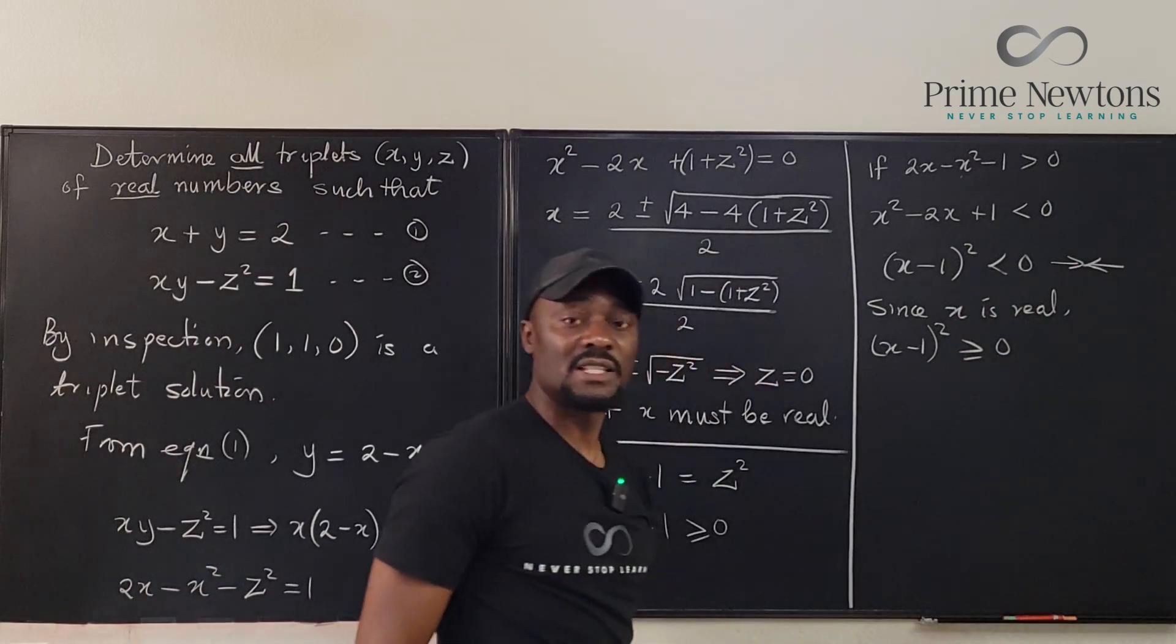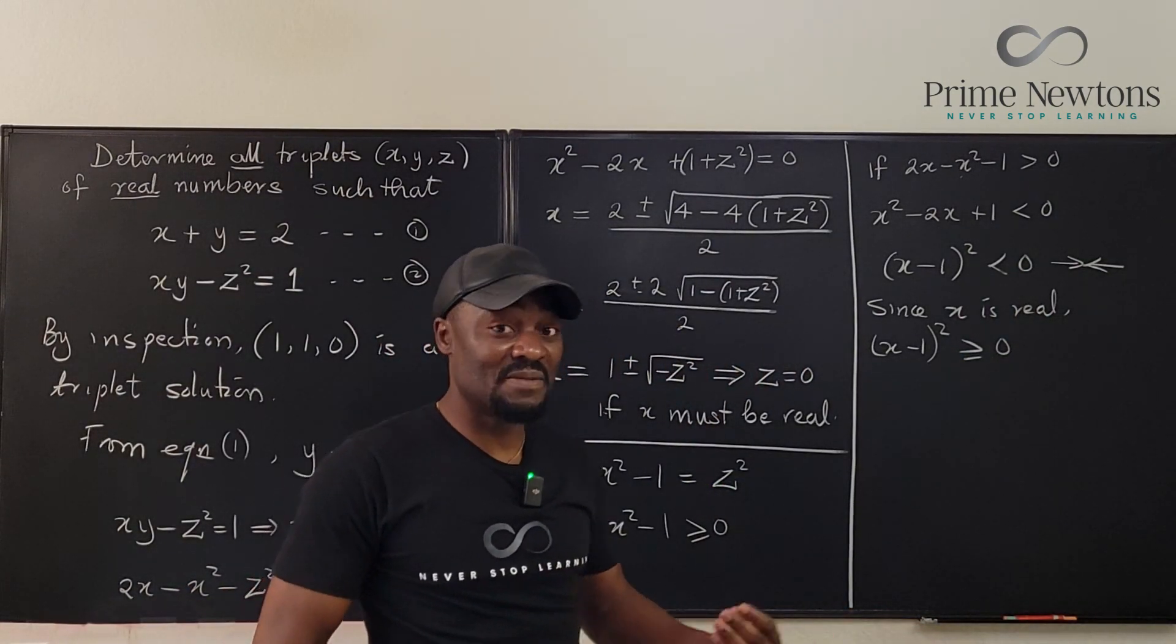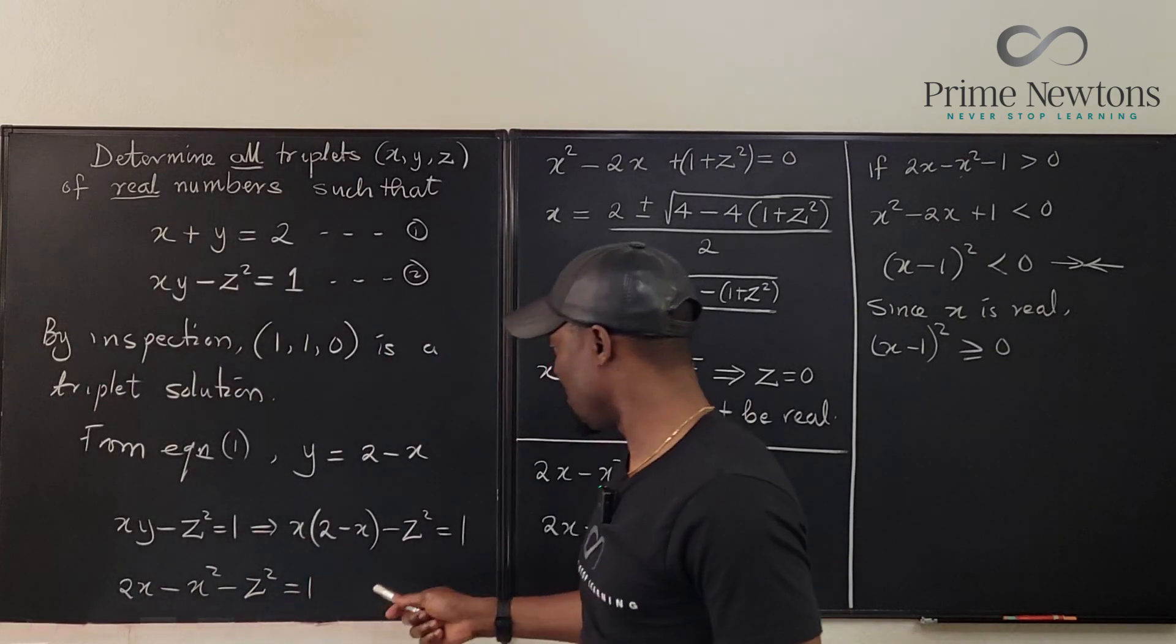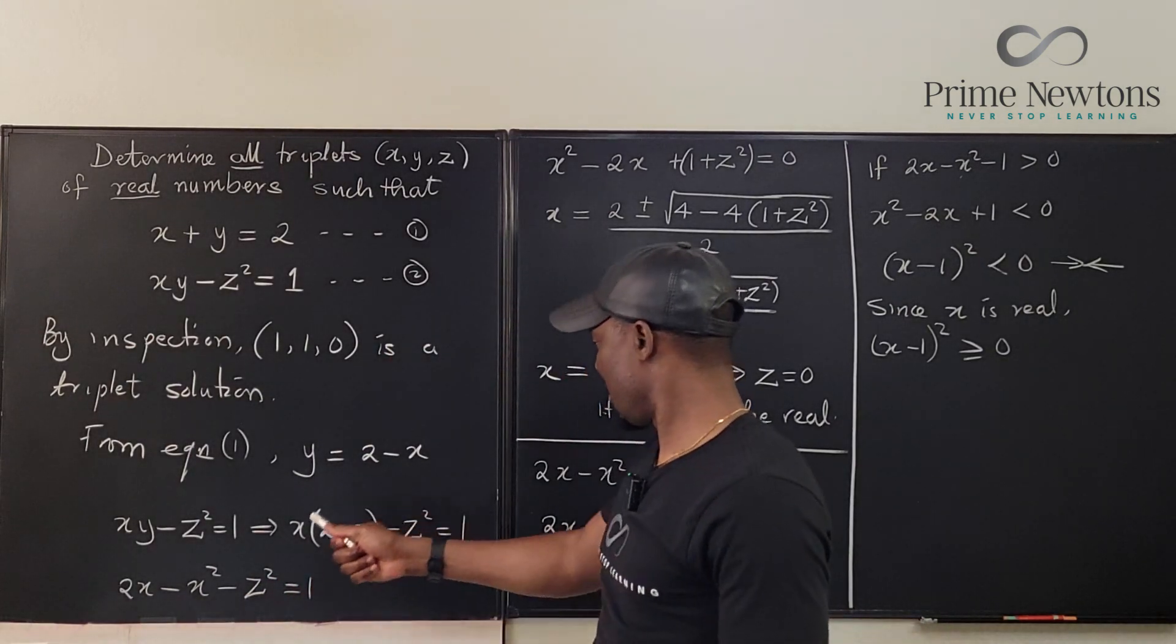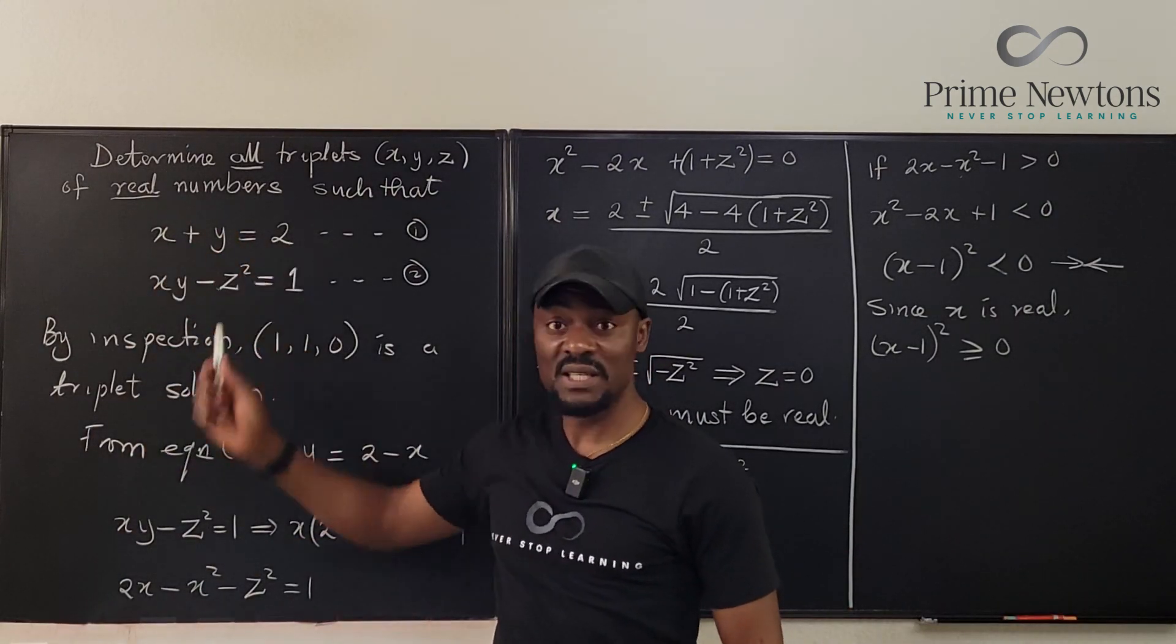That's the case. So it means no matter what you do, it is not possible for you to find another value of z that satisfies this equation here. z just has to be 0, as long as this is what we're dealing with.